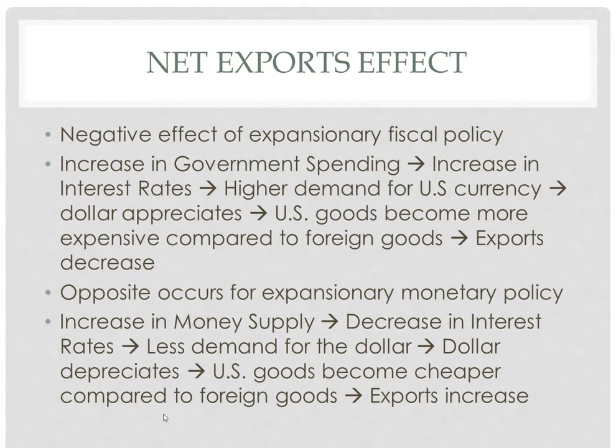However, that doesn't occur with expansionary monetary policy. When the government increases the money supply, that reduces interest rates, decreasing the demand for the dollar. So the dollar sinks in value as people don't want the dollar as much, meaning that U.S. goods are now relatively cheaper. People buy more U.S. goods as a result, increasing exports to other countries, and GDP increases.